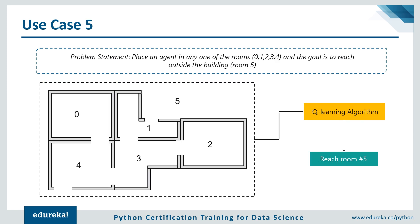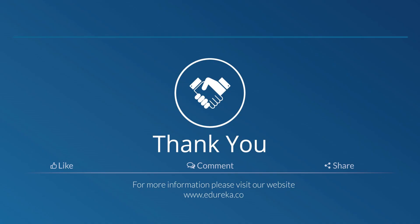The final use case is a reinforcement learning problem: place an agent in one of the rooms — represented as 0, 1, 2, 3, 4, and 5 — and the goal is to reach the outside of the building, which is room number 5. To solve this, we use the Q-learning algorithm. There is no predefined dataset because the dataset is developed by the agent itself — the agent explores the environment, collects useful information, and uses it to navigate to room number 5.